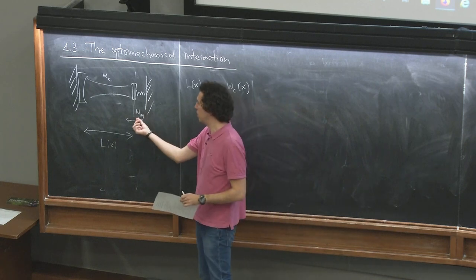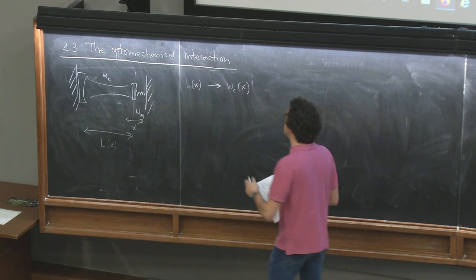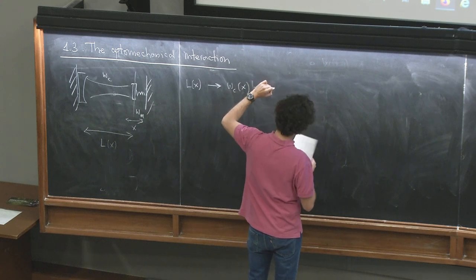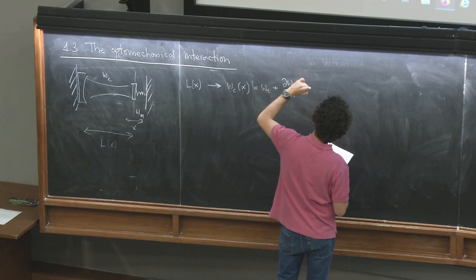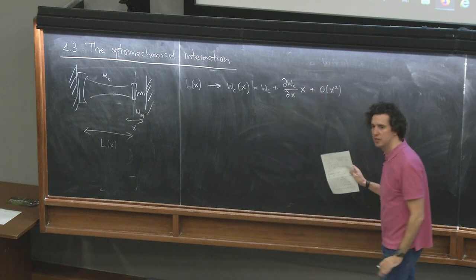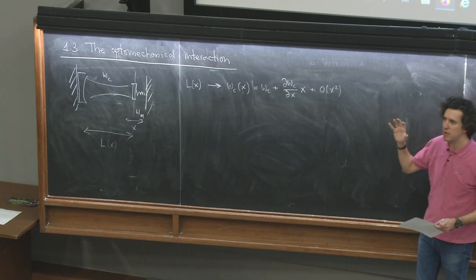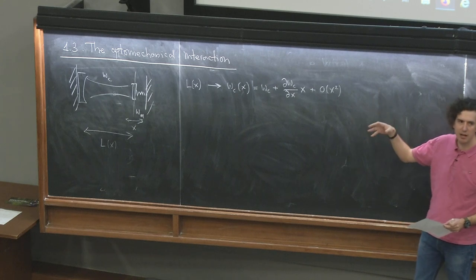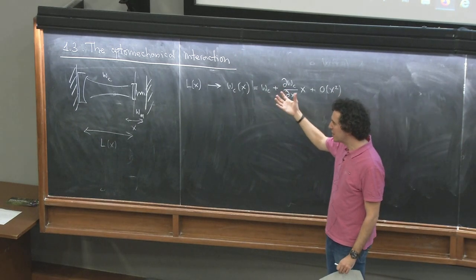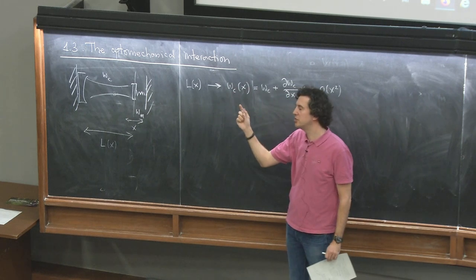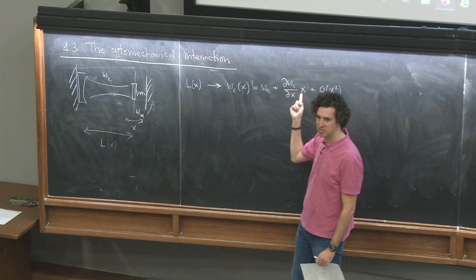Typically, since this motion will be very small in amplitude, you can Taylor expand this function. You get the zero-order term, plus a term that is linear in X, plus terms of order squared or more that, to start, we will neglect. This is not the most rigorous way, but it gives a very nice physical intuition. The resonance frequency of the resonator depends on the position of the mechanical degree of freedom, and by linearly expanding, you get a dependence that is linear in X.